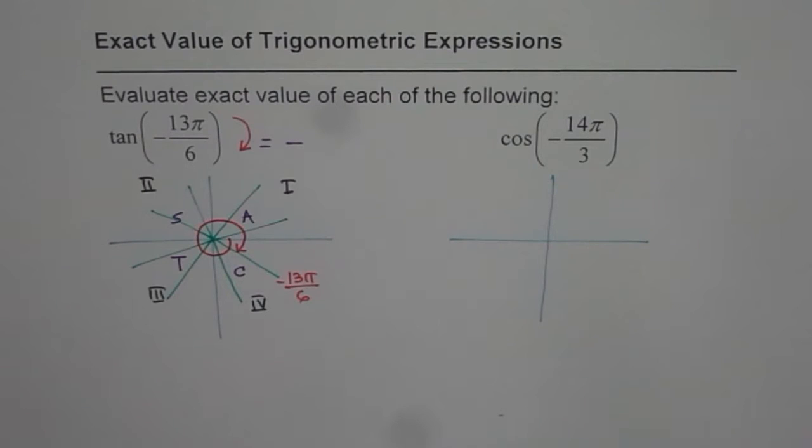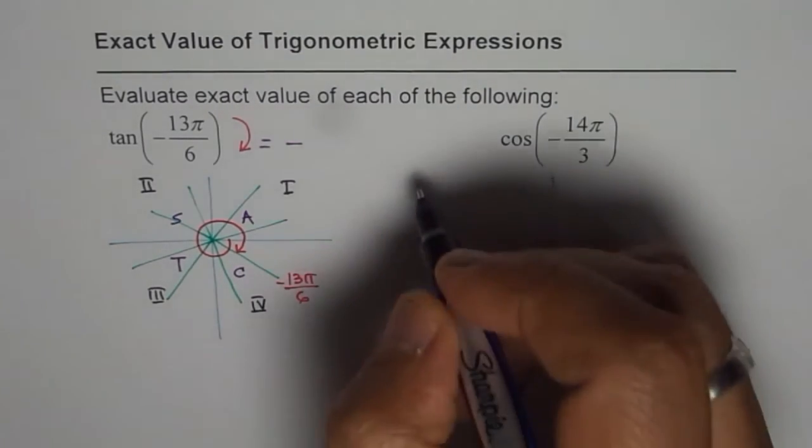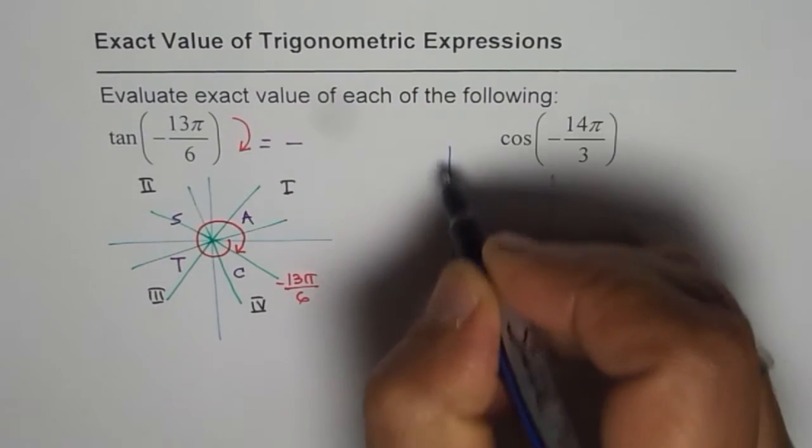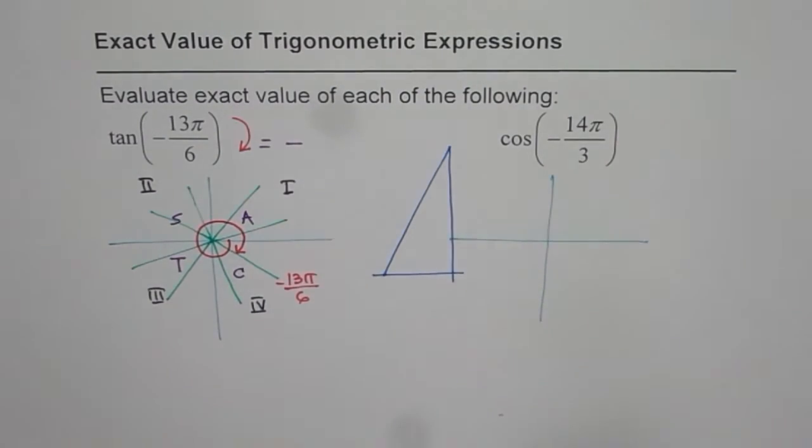Now, what is the exact value? To find the exact value, we will use special triangle. So let's sketch one special triangle. We will just sketch one here, right in the center, so that we can use it for both.